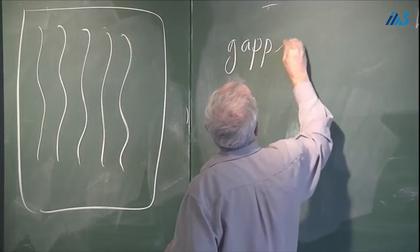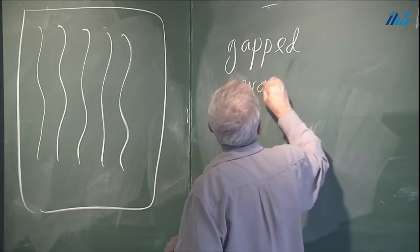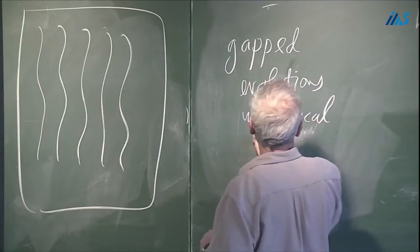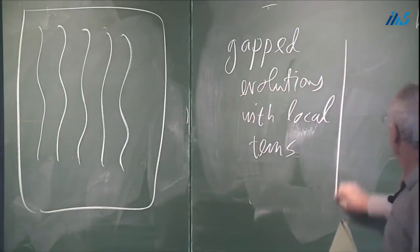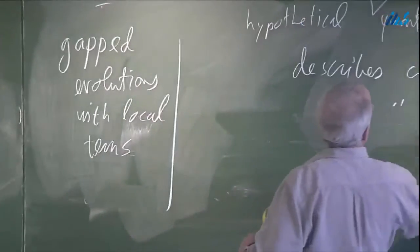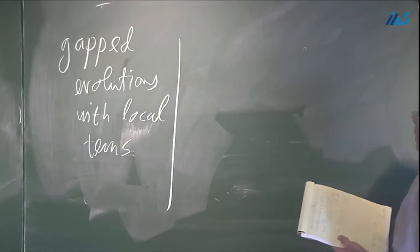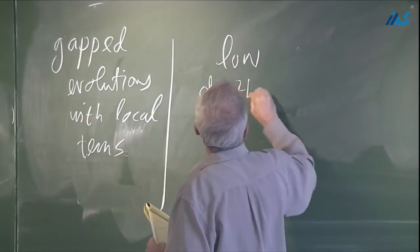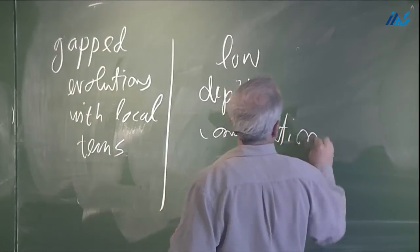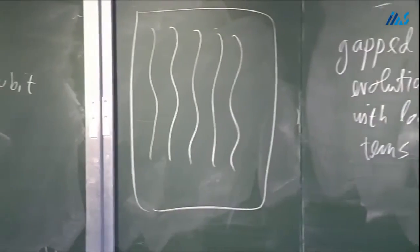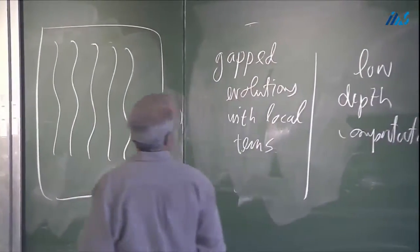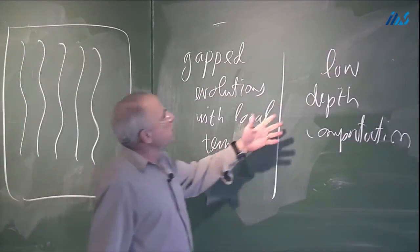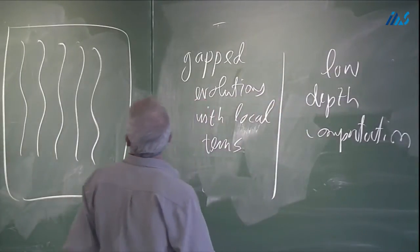So, equivalence classes for gapped evolutions with local terms. And here, when we say local, we mean geometrically local terms. And the equivalent description, where the equivalence is not, I wouldn't say it's a mathematical theorem, but it is based on much research, is low-depth computation. And here, because of geometric restriction, the meaning of low-depth is much more firm than when we talk about abstract models. So, the equivalence class with respect to gapped evolution with local terms are also described with respect to low-depth computation. And these equivalence classes are called phases of matter.